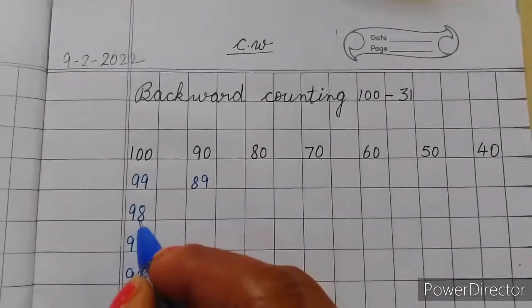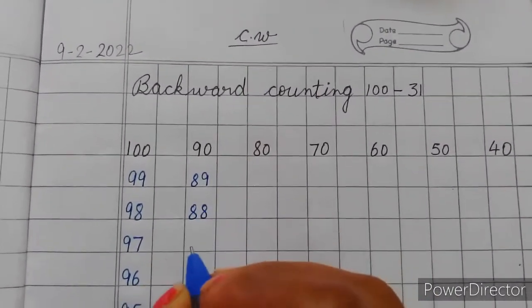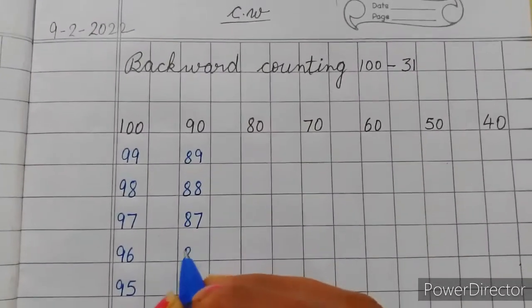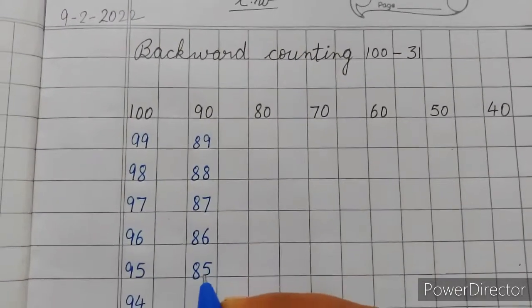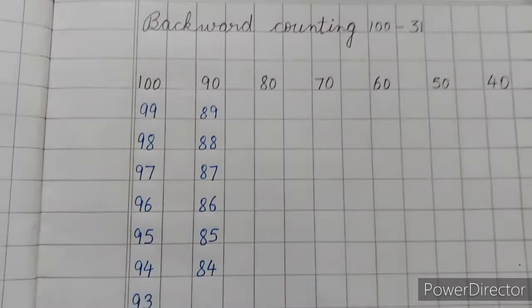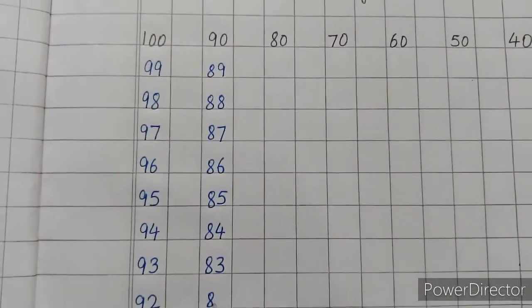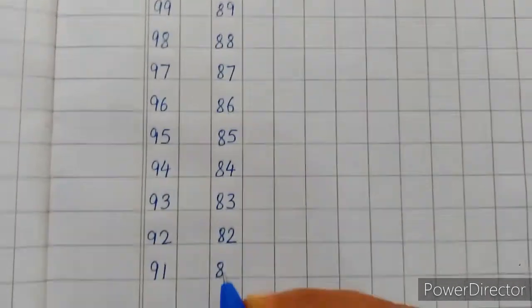90, 89, 89. Dekho, 9 se pehle kya hai? 8. To abhi kunsi line aayegi? 8 ki? Phir 88, 88, 87, 87, 86, 86, 85, 85, 84, 84, 83, 83, 82, 82.